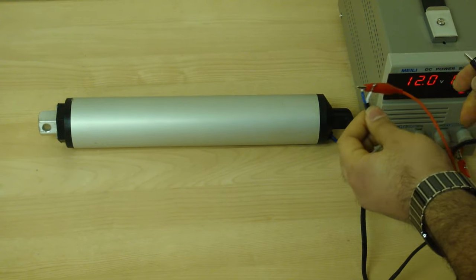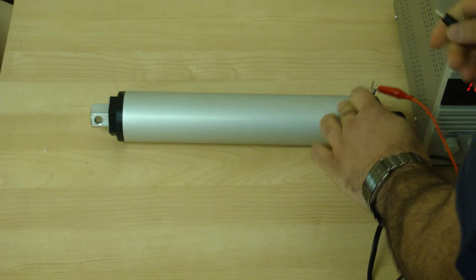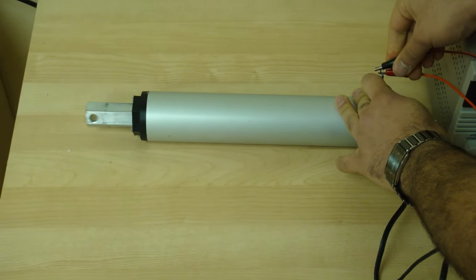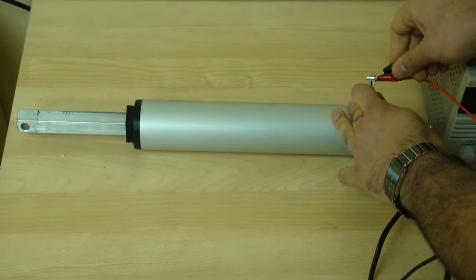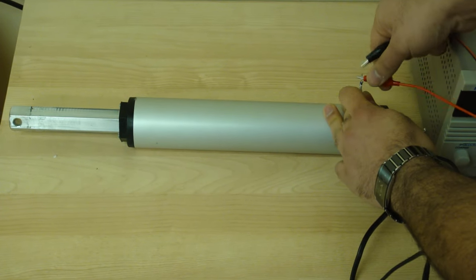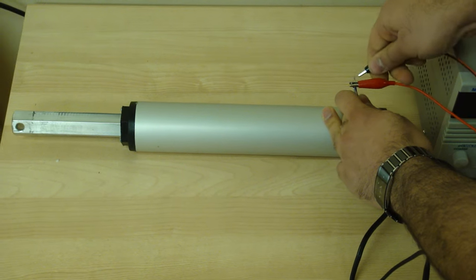And then we have the two wires, positive and negative. You just have the actuator in place, you plug it in and the actuator will move. Simply reverse the polarity to retract it.